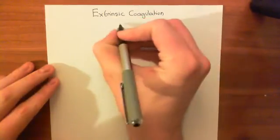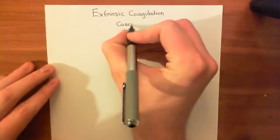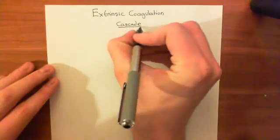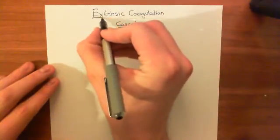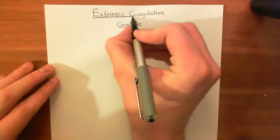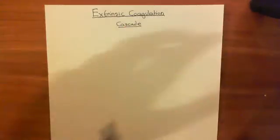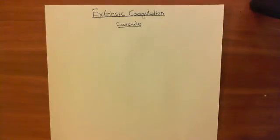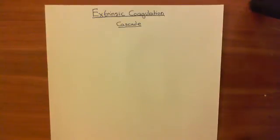The reason it's called the extrinsic coagulation cascade is that it relies upon one protein that is external or extrinsic of the bloodstream. The intrinsic coagulation cascade required only proteins of the blood to trigger — when these coagulation proteins came into contact with the collagen of the basement membrane of the capillary that was exposed when you had damage to the endothelium, that caused the intrinsic coagulation cascade.